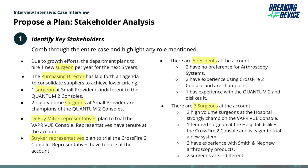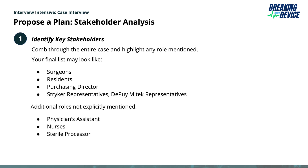The first step is identifying the key stakeholders, and this is actually a rather easy task. You're going to comb through the entire case and simply highlight any sort of role that's mentioned. It doesn't need to be terribly specific. If we look at the case and highlight all of the individuals mentioned, you can see we've highlighted surgeon, purchasing director, other representatives, residents, etc.